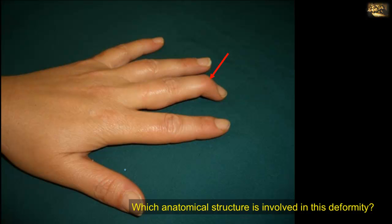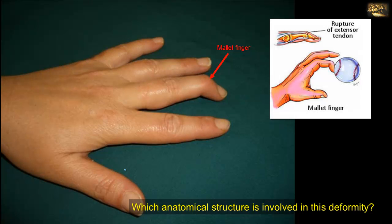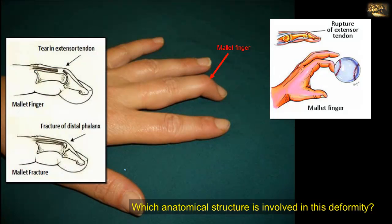Which anatomical structure is involved in this deformity? This is a mallet finger deformity, when a finger is forcibly hit at the distal interphalangeal joint. This causes it to bend forwards quite suddenly, and this causes the tendon of the extensor expansion attached to the distal phalanx to pull off the bone. Usually it pulls off without a piece of bone, but sometimes it can pull off a fragment of bone resulting in an avulsion fracture, but in both cases there is a mallet finger deformity.